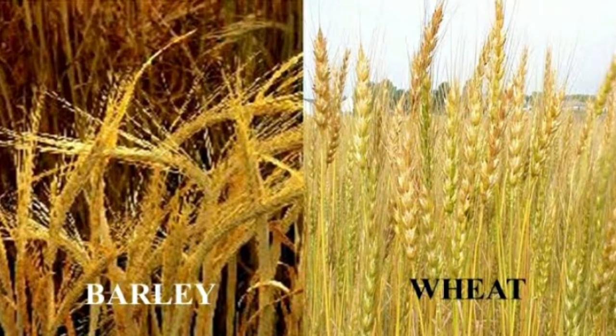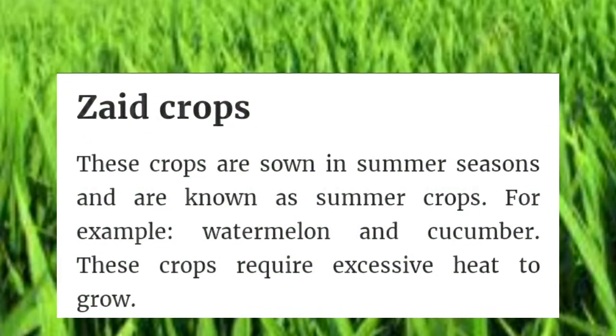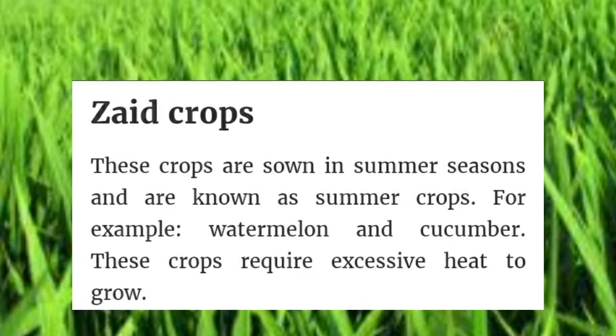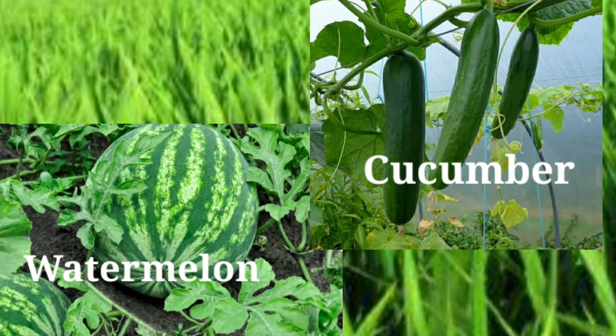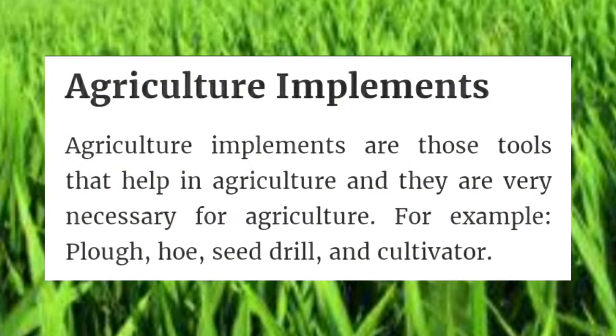Rabi crops require less water to grow. What are Zaid crops? These crops are sown in the summer season and are known as summer crops. Examples include watermelon and cucumber. These crops require excessive heat to grow.